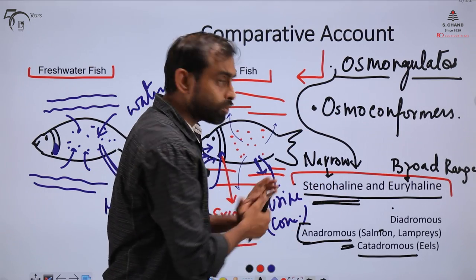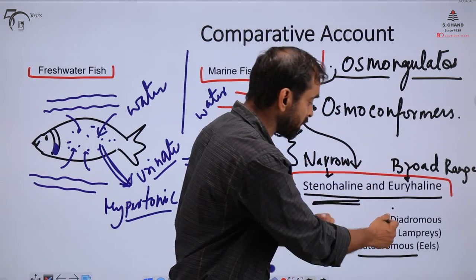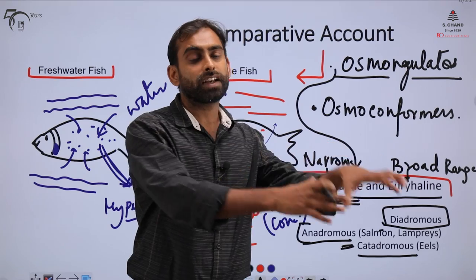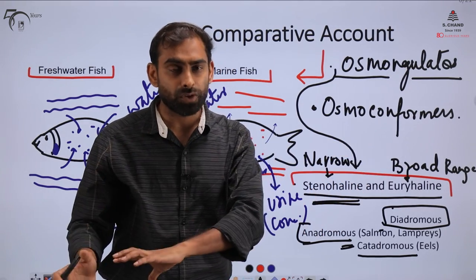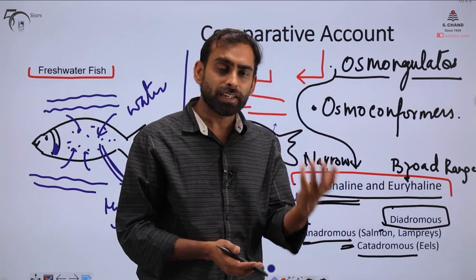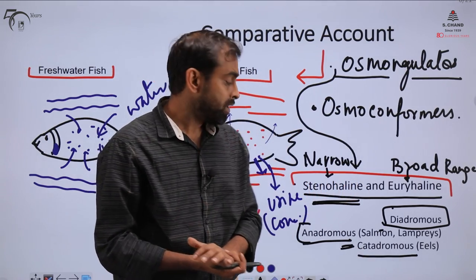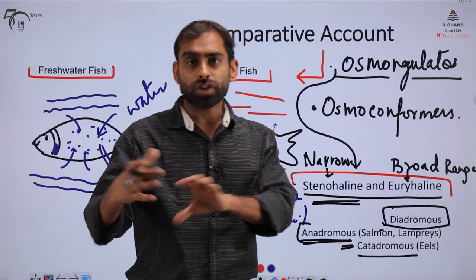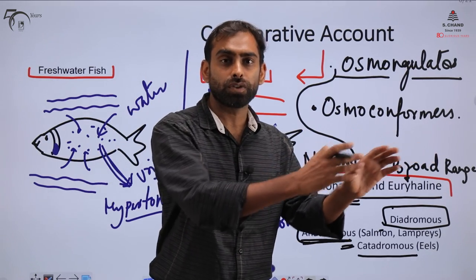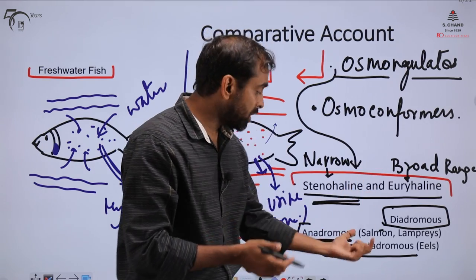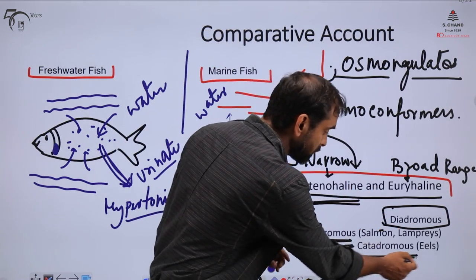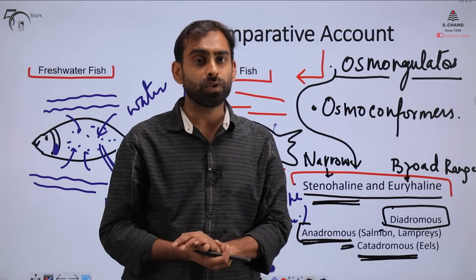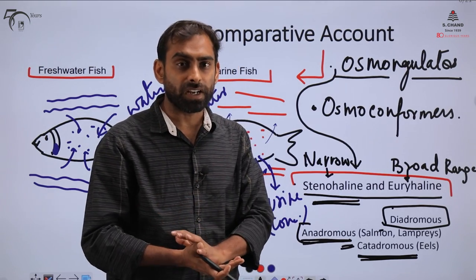Euryhaline fish are also called diadromous, as they spend part of their life in oceans and part in fresh water. Anadromous fish usually stay in oceans but move to fresh water — like estuaries and rivers — for breeding; examples include salmon and lampreys. Catadromous fish are the reverse: they usually stay in fresh water but move to salt water for breeding.